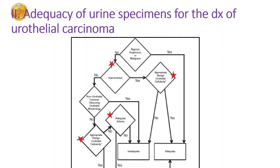The adequacy algorithm: if you have atypical, suspicious, or malignant cells it automatically becomes an adequate sample. For an instrumented sample, if you have appropriate benign urothelial cellularity it is adequate; if you don't have two urothelial cells per 10 HPF, or less than 2,600 cells, it becomes inadequate. If the volume is not adequate and you don't get adequate cellularity, say it is inadequate.